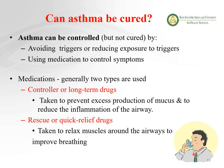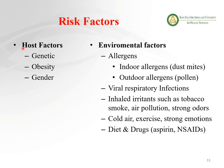Beta-2 agonist sympathomimetic agents cause bronchodilation, and parasympathetic antagonists can also cause bronchodilation. These will be discussed in detail in the coming slides.